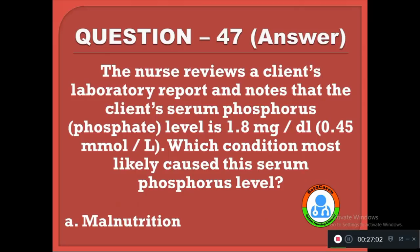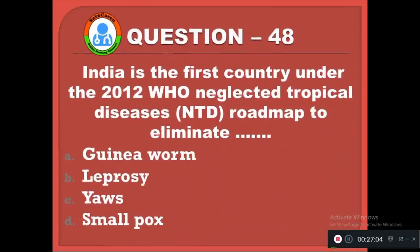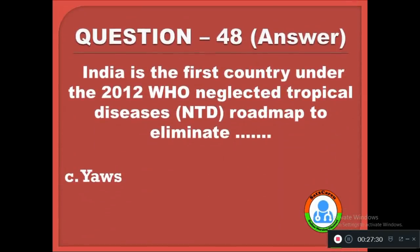Question 48: India is the first country under the 2012 WHO Neglected Tropical Disease roadmap to eliminate — option A: guinea worm, B: leprosy, C: yaws, D: smallpox. The correct answer is C, yaws was eradicated from India in the year 2012.